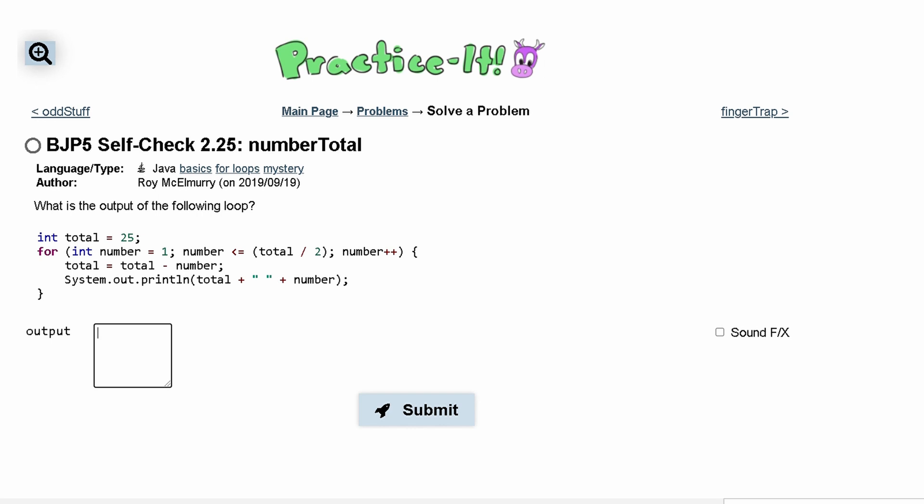So we start out with our for loop, and our for loop is saying that we have a number that's 1, and for as long as our number is less than or equal to total divided by 2, we are going to be in this loop.